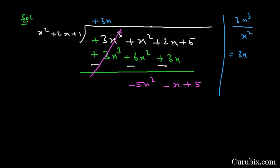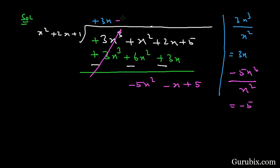To find the next term in the quotient, we divide −5x² by the first term of the divisor, which is x². This gives us −5. So the next term in the quotient is −5.